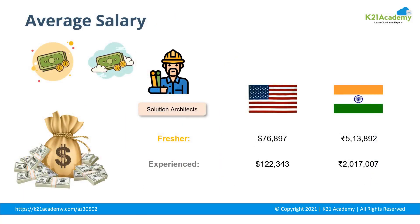Coming to the major motivation behind solution architect job roles — the average salary packages. If you are a fresher in the USA, you would get around $76,000, and if you are a fresher in India, you may get around 5 lakhs. For experienced professionals, you may get around $122,000 in the USA and around 20 lakhs in India. That's a great number.